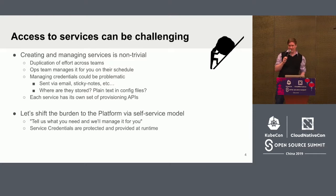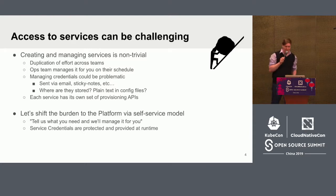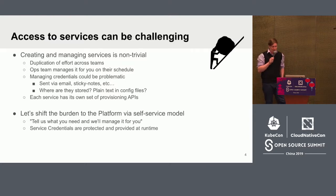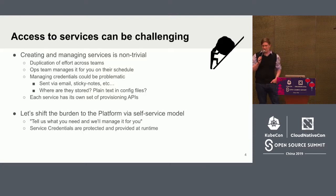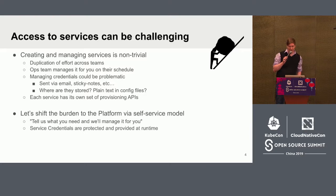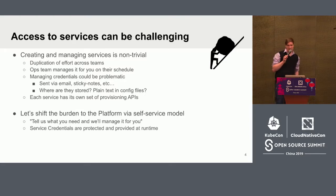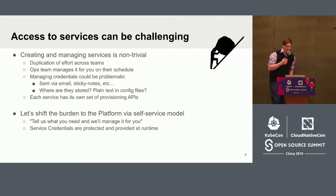Each of these services is also going to be managed and deployed in its own way. If I have a relational database I've got to provision, other APIs my application might depend on probably have their own different ways that they're provisioned. I don't care about any of these, really. So it would be nice if we could shift the burden of all this provisioning and managing to the platform so that the application developer doesn't have to care about it. Kubernetes already has secrets, which is a good way to encapsulate credentials, so it would be nice to take advantage of that. And that is what a service catalog does.